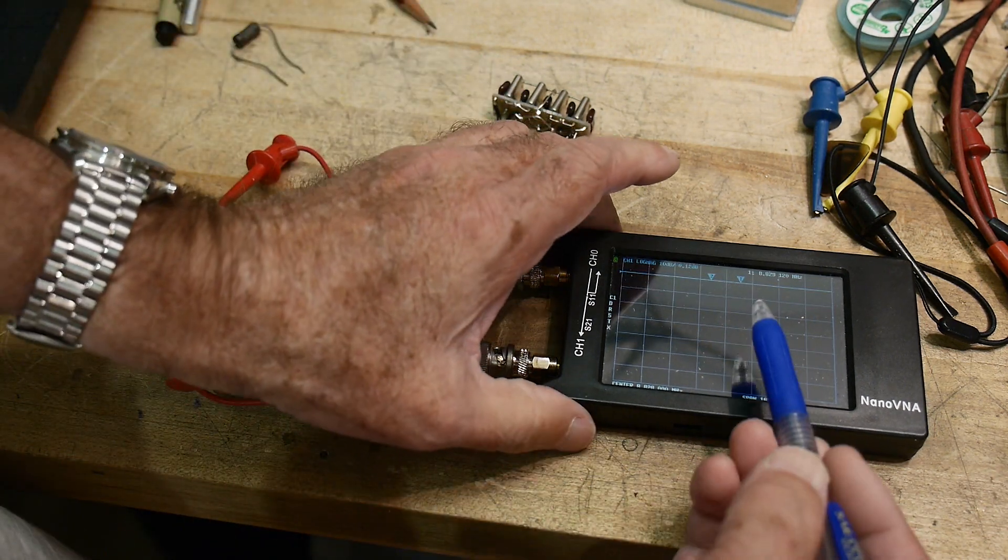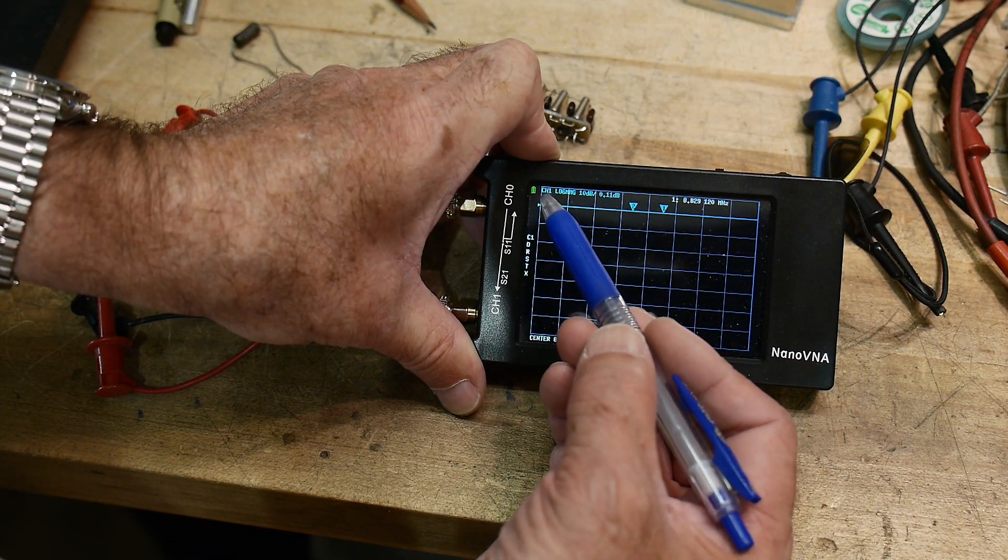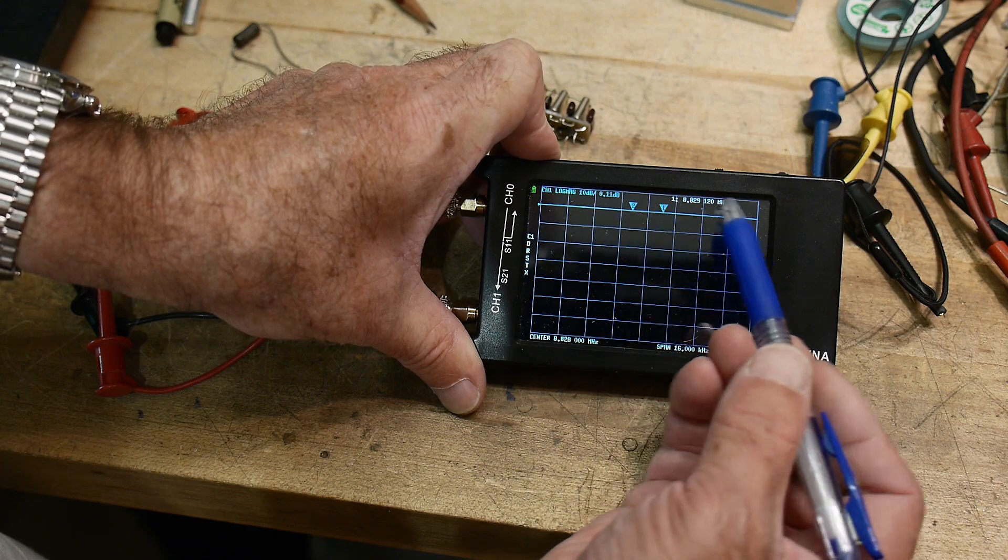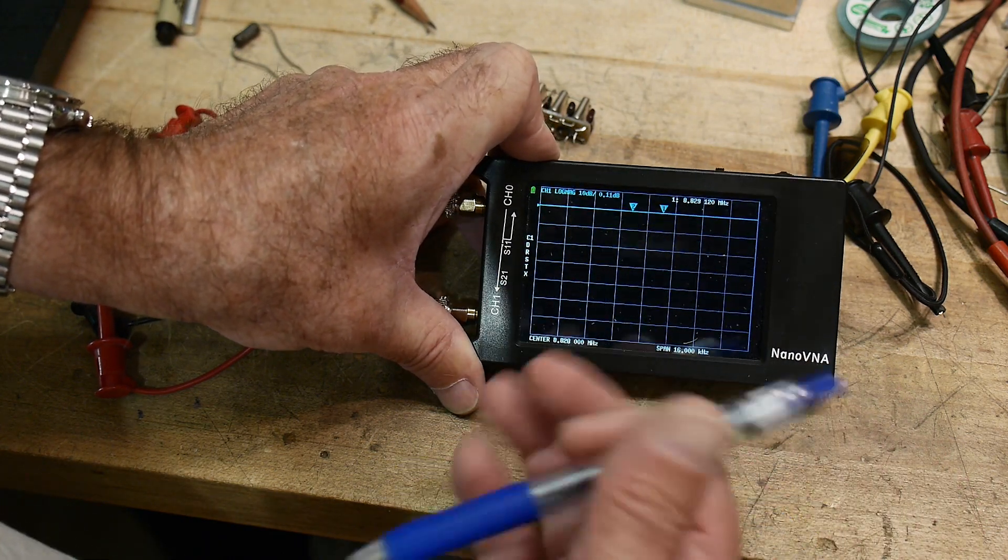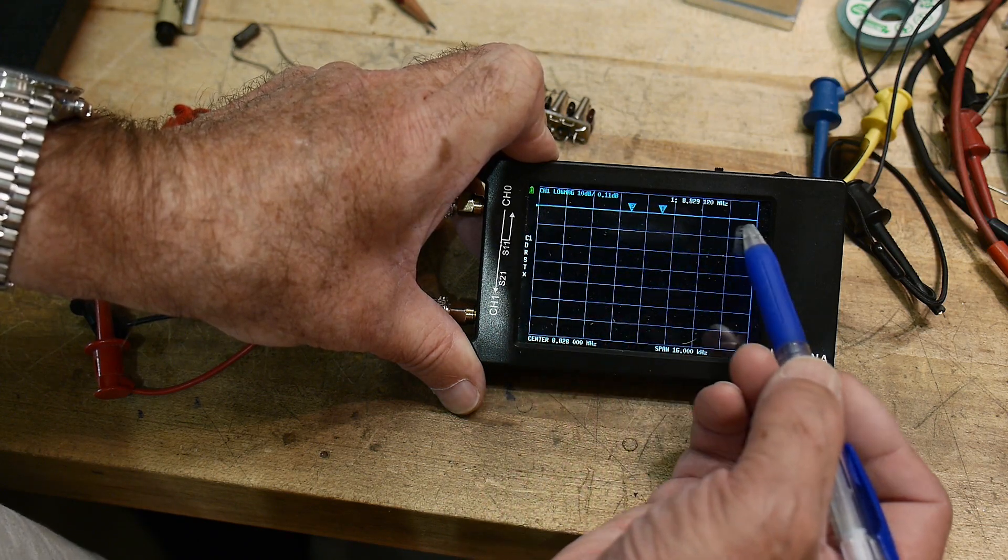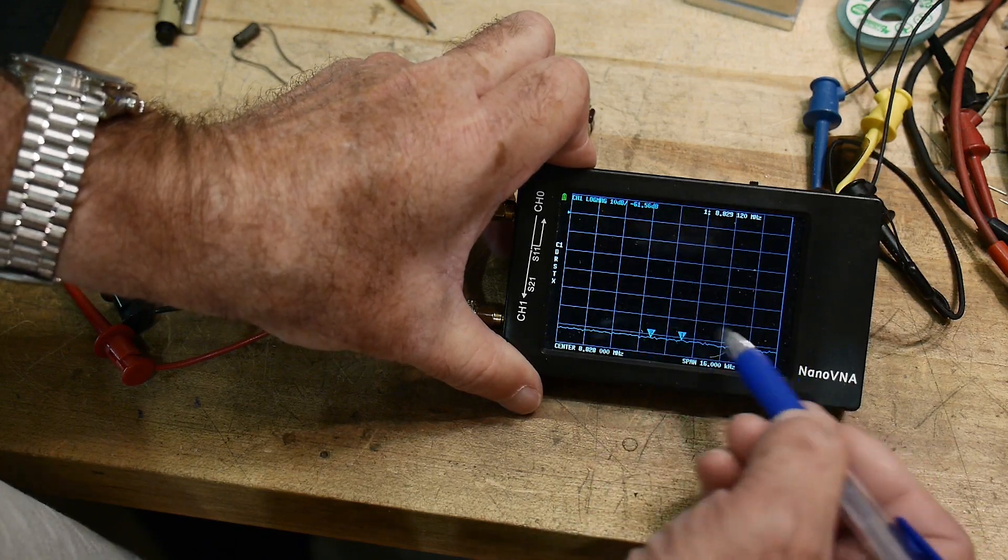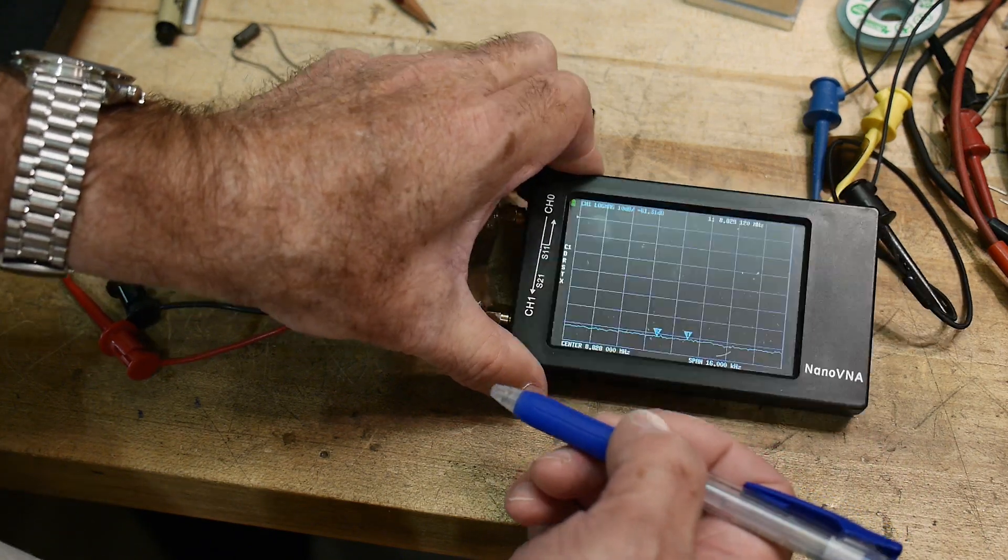And we should be on the blue trace. So channel one, log mag. So this is a through measurement. And there's lots of videos that show you how to do that. We're doing a through measurement. So everything here is zero dB going all the way through. If I open it up, it falls down here. So that's the noise level of the instrument.